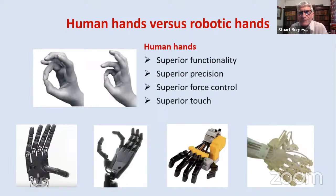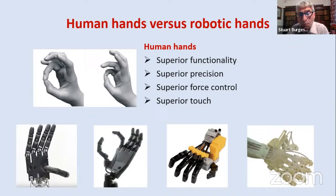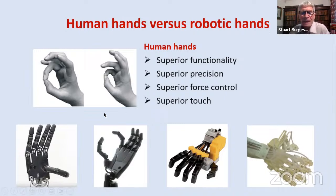It's useful to compare human hands versus robotic hands. Human hands have superior functionality, precision, force control, and touch — despite engineers using the most advanced actuators and materials with lots of resources. It's very difficult to even begin matching the performance of the human hand. Building robots is humbling because you realize just how good human hands are.